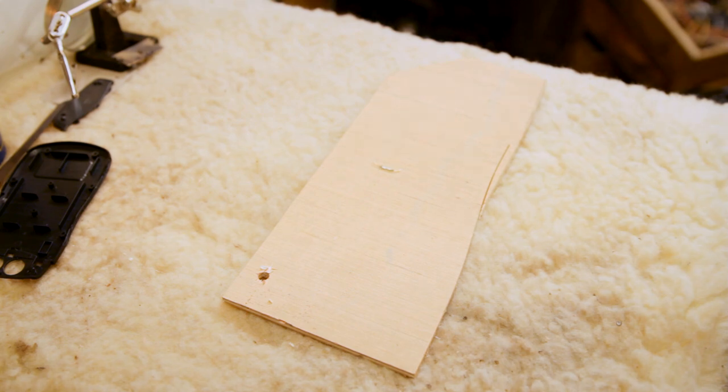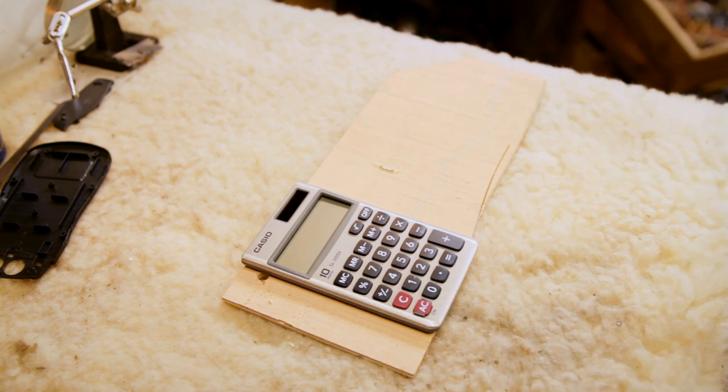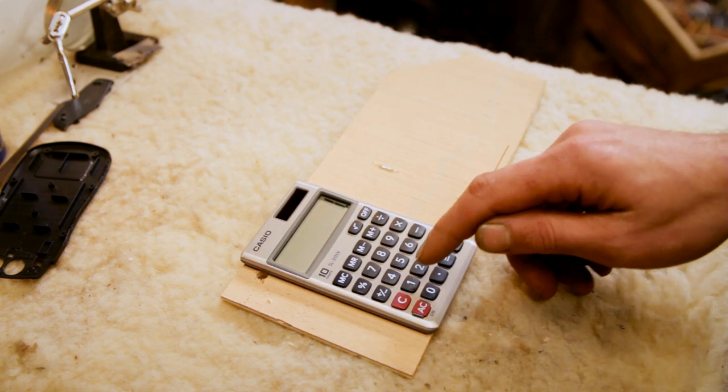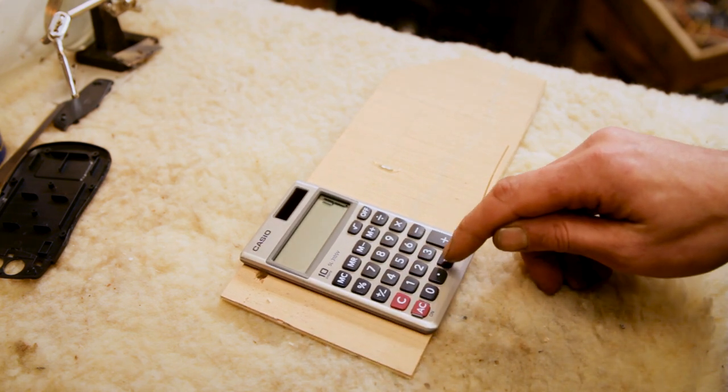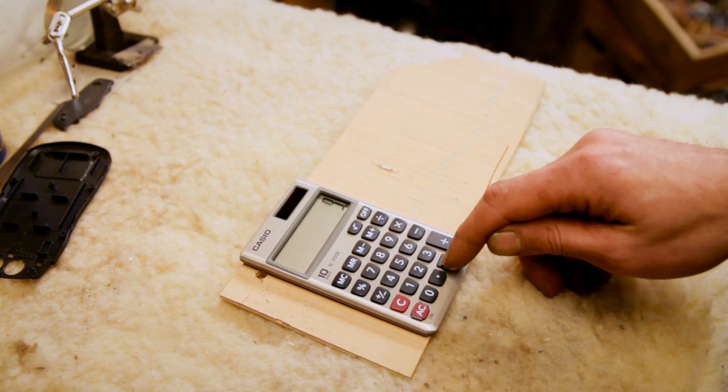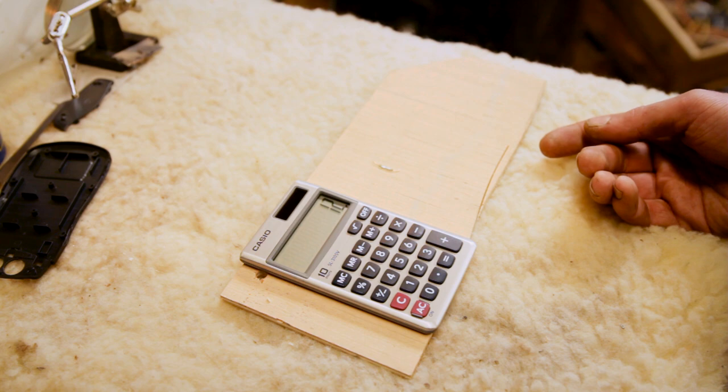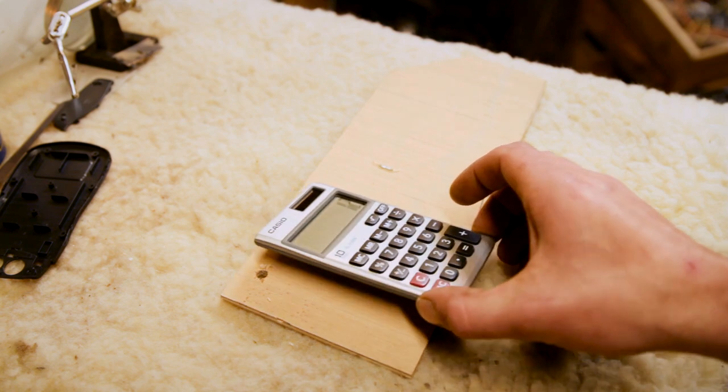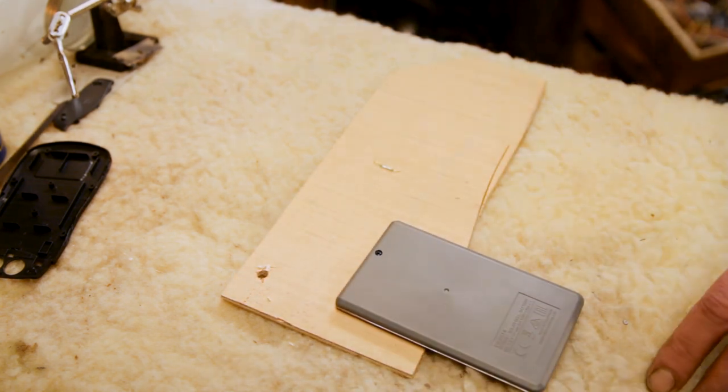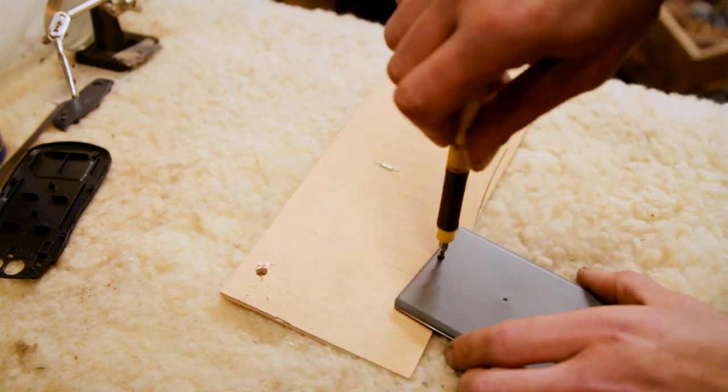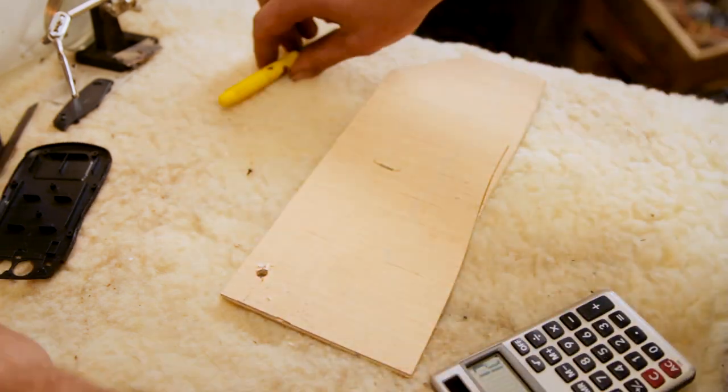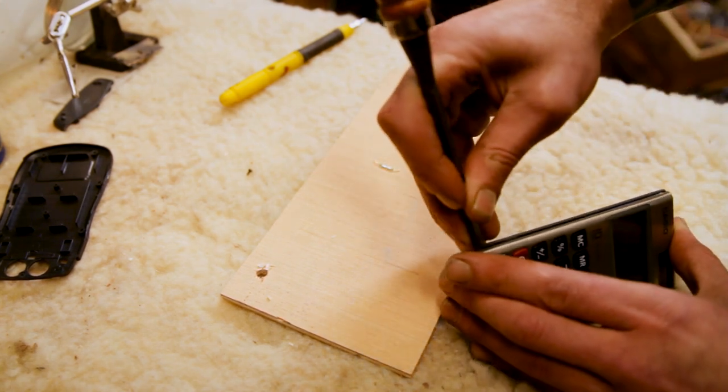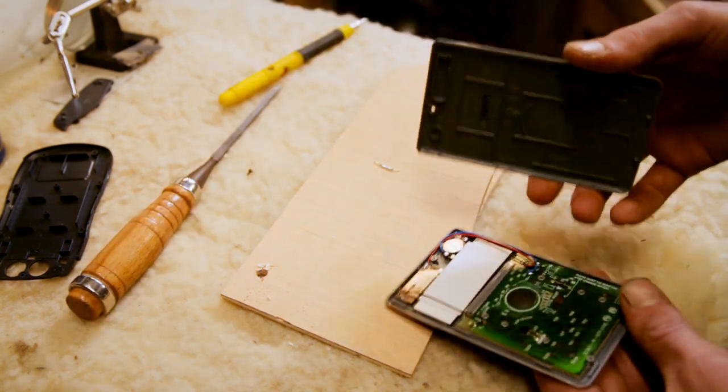Now that we have the reed switch removed, we need to find something we can use as a counter for the switch to trigger, and I think I have a perfect candidate. Now I remember being a kid pressing one plus one equals, and every time you hit it the number goes up by one. That's exactly what we need for a counter.